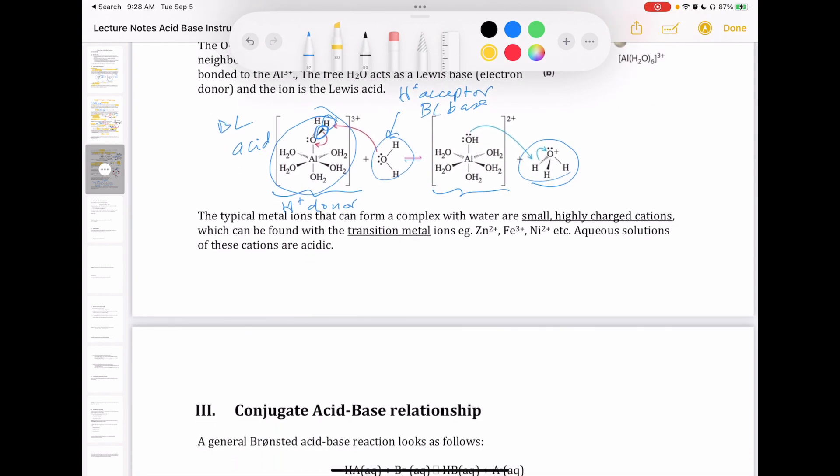The key finding, though, is that aluminum, when dissolved in water, is acidic. The take-home message here is that some of these small, highly charged cations can form the hydrated metal ion in the presence of water. And these small, highly charged cations usually come from the transition metal ions. So you will see this type of reaction happen with zinc, iron, nickel, aluminum, and some other transition metal ions.